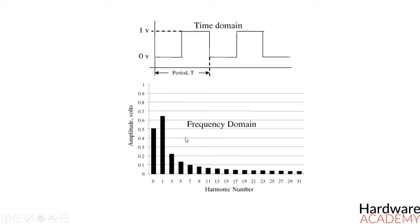Frequency domain representation is also called as Fourier series which is a way of representing a periodic function as a sum of sine and cosine functions.